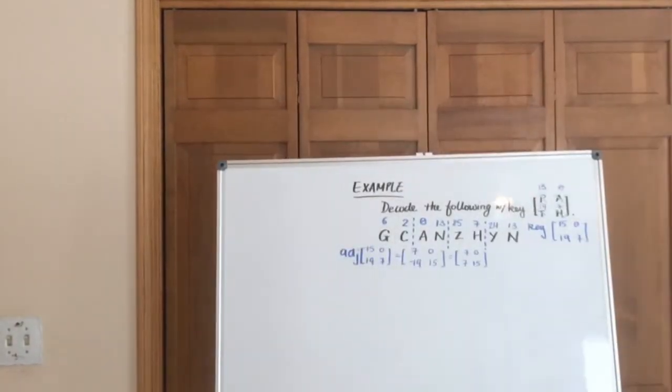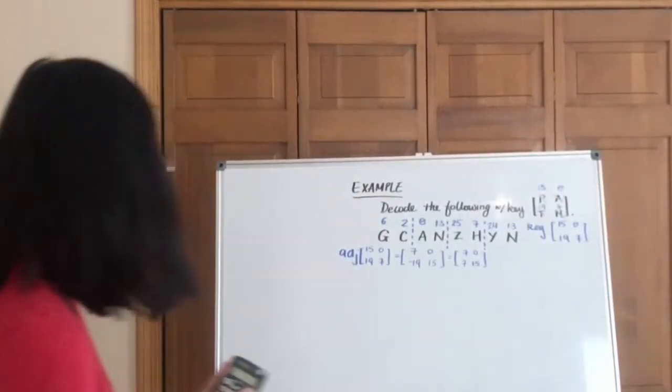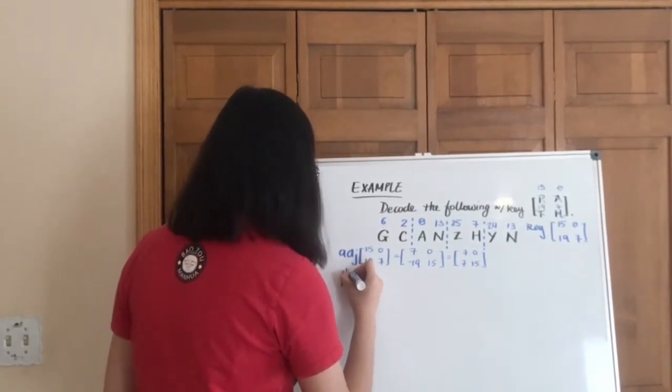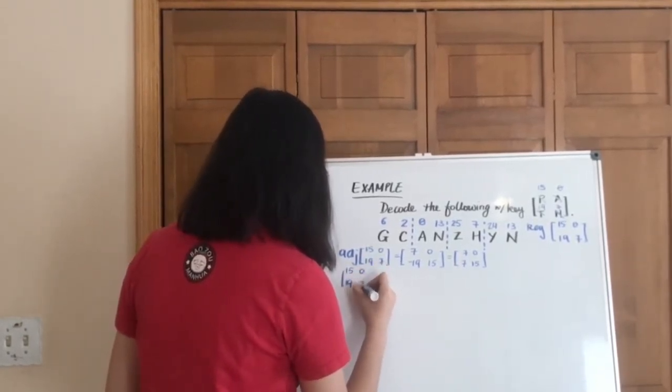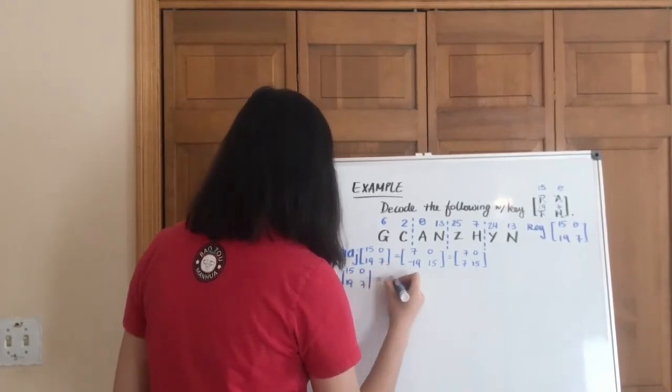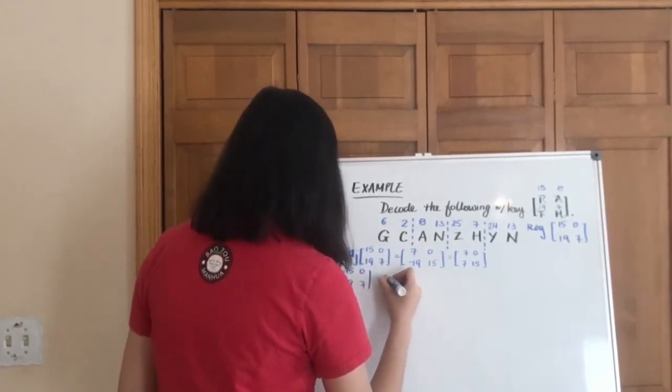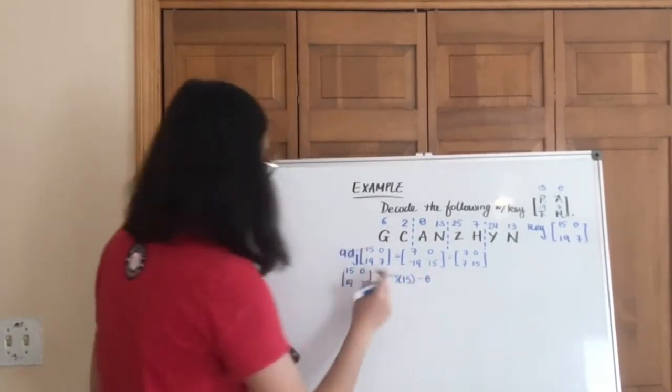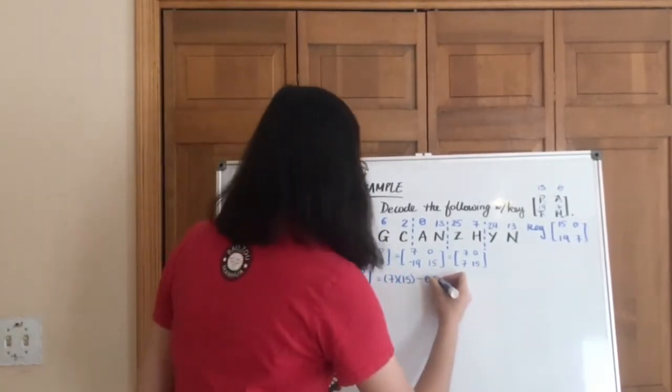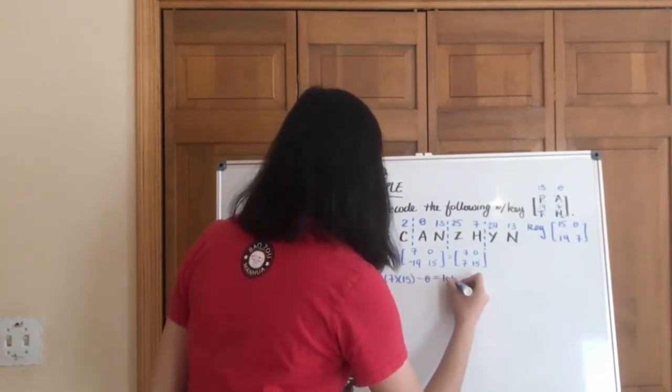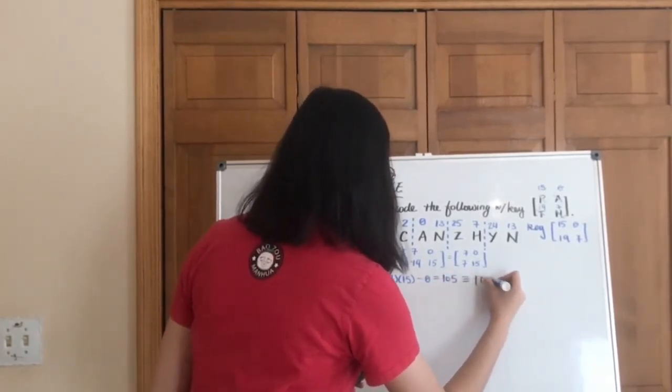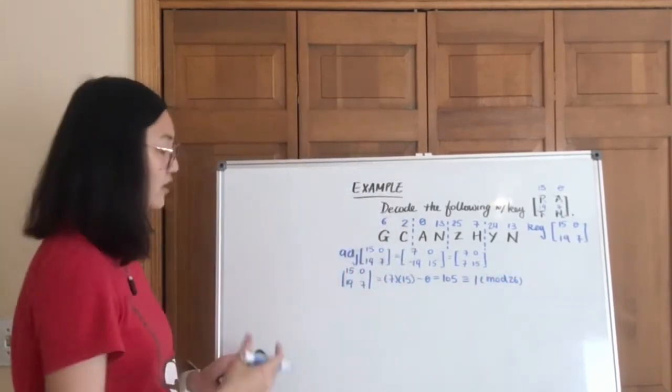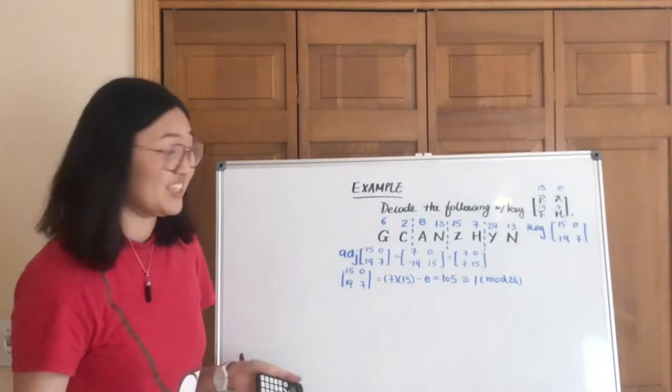And let me get my calculator. So, and then the determinant is going to be 15 times 7 minus basically 0, because 0 times 19 is 0. And we can say that's 105, which in mod 26 is 1. So this is awesome, because we don't have to do anything more.